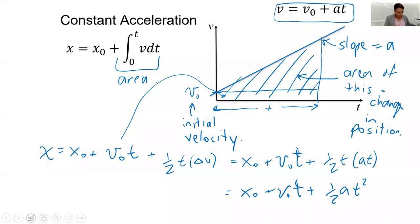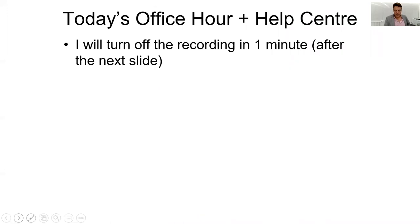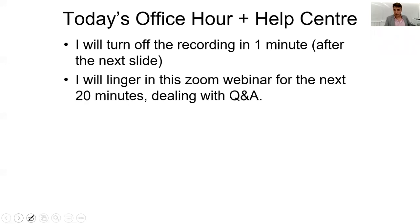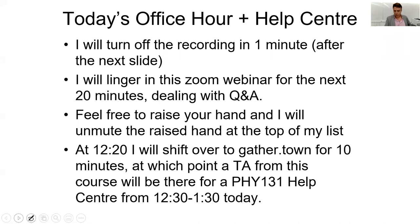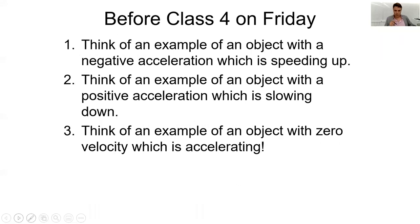So this is pretty much it for today. I'm going to turn off the recording in about a minute, I will linger actually on this zoom for the next 20 minutes before I go to gather town, feel free to raise your hand and I'll unmute you and we can kind of have a chat, and then at 12:20 I'm going to be shifting over to gather town for a few minutes, at which point then the TA from this course will be able to help you out all the way to 1:30. But before we go, before on Friday, I want you to think between now and Friday, think of an example of an object with a negative acceleration that is speeding up, is it possible? Also try to think of an example of an object with a positive acceleration, which is slowing down, and lastly, think of an example of an object with zero velocity, which is accelerating. So thanks and I'll see you Friday.